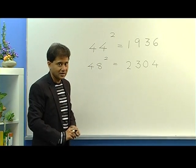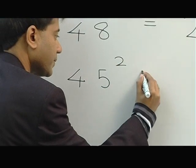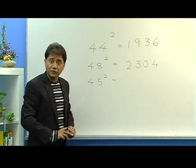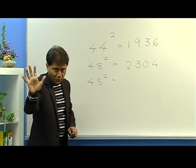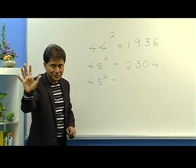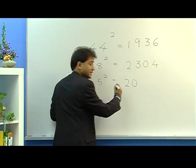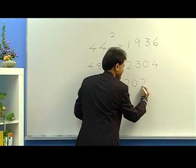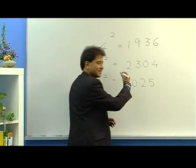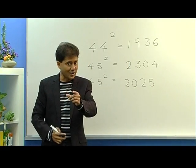Well, the last example: 45 squared. The difference from 50 is 5. I subtract this 5 from 25. 25 minus 5 is 20, and then 5 squared is 25, and this is your answer. You saw how fast this method is.